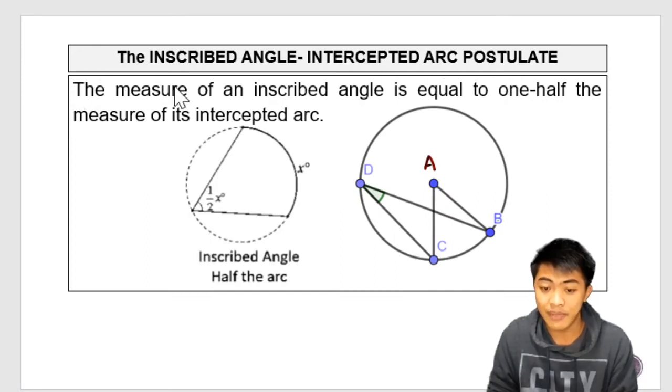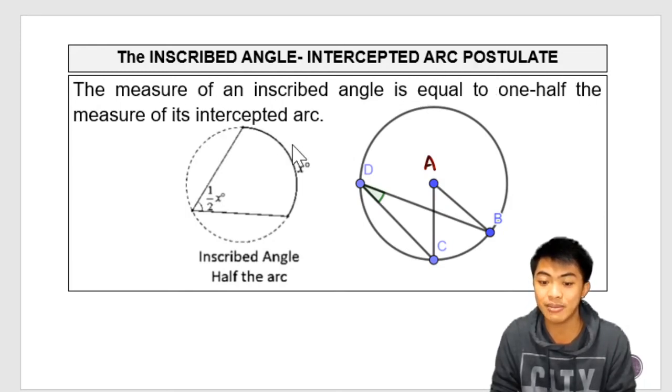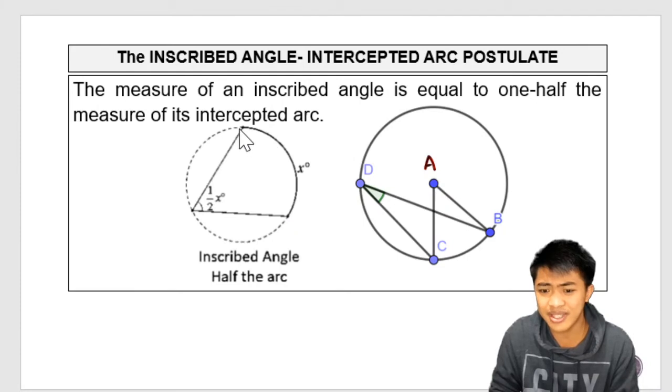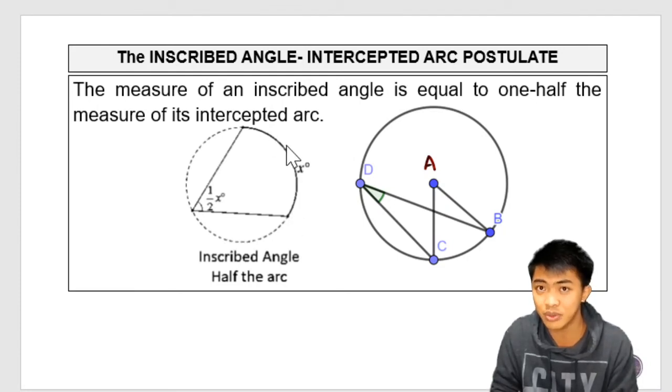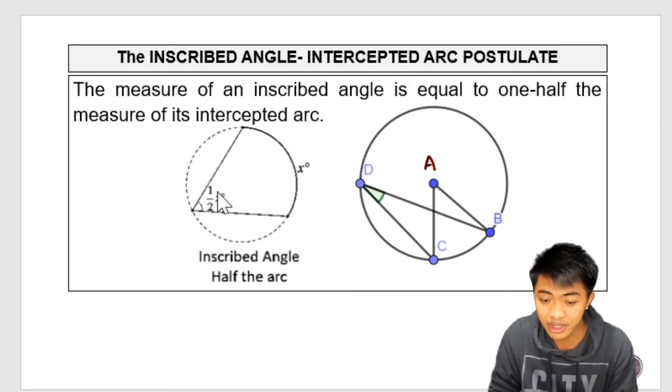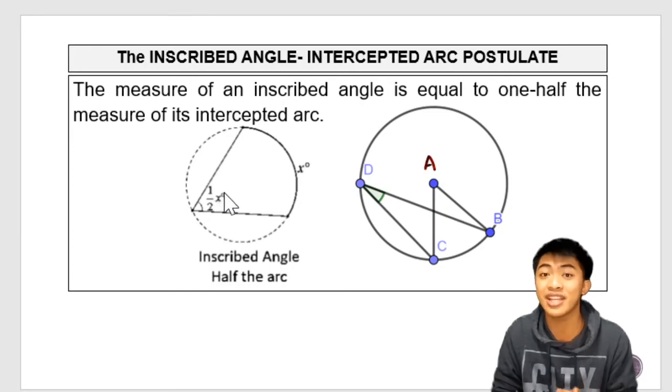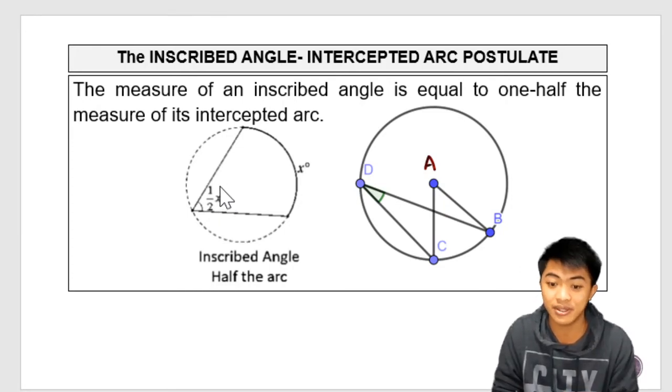Now let's go to the inscribed angle intercepted arc postulate. It says that the measure of an inscribed angle is equal to one-half the measure of its intercepted arc. Kung sa central angle parehas, sa inscribed angle, half. So let's say, for example, the intercepted arc measures 100 degrees. Well, definitely, its inscribed angle will measure 50 degrees. Saan na po yung 50 degrees?